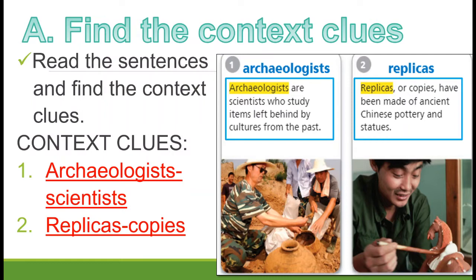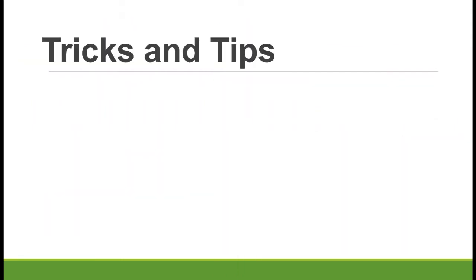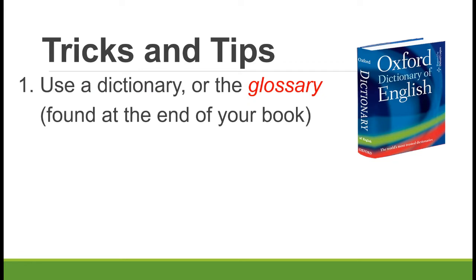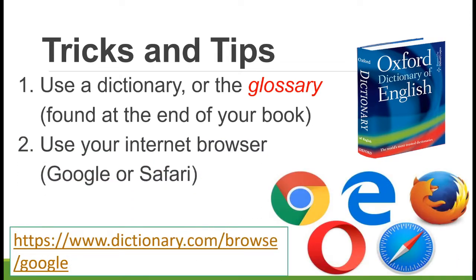If you are done, here are some tricks and tips for this activity. If you have a book, use the dictionary or the glossary at the back of your Journeys book — the last four to five pages have a list of vocabulary words and their meanings. If you don't have a dictionary at home, use your internet browser — Google or Safari — and type the word to get the meaning and example sentences.